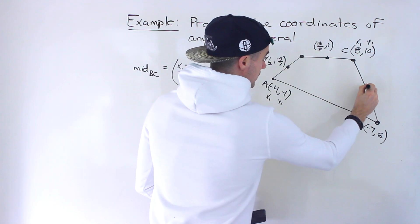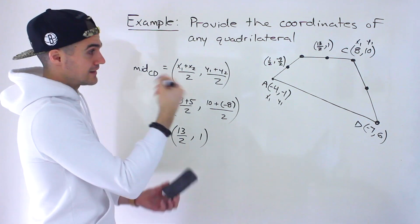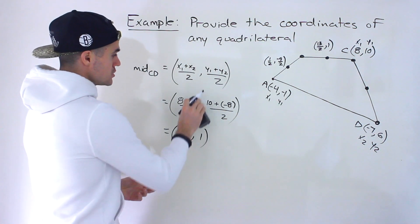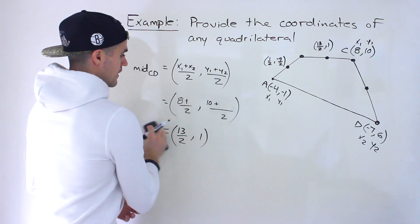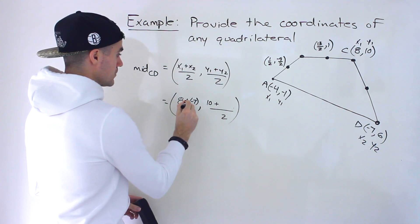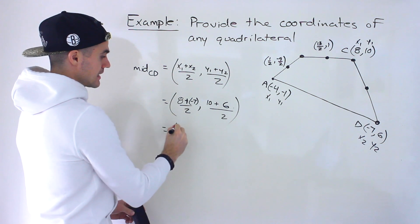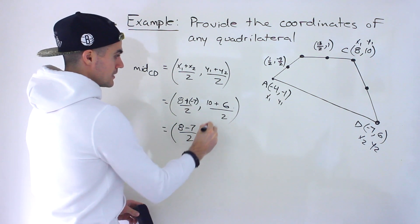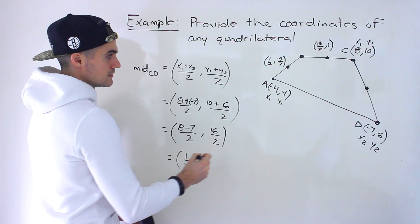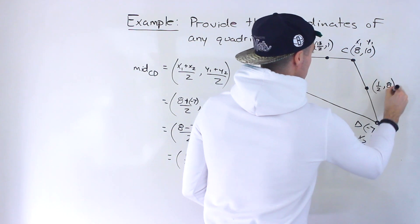Now let's find the midpoint of CD. C is already labeled X1, Y1, so let's label D as X2, Y2. What changes is X2, which is negative seven, and Y2, which is six. So we get: eight plus negative seven over two, which is eight minus seven, giving us one over two; and ten plus six over two, which is sixteen over two, giving us eight. So the midpoint of CD is (1/2, 8).